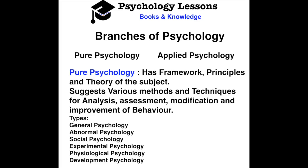Now let's take up the different branches of psychology. There are two basic branches: pure psychology and applied psychology. Pure psychology is directly connected — it has a complete structural framework with principles and theories. It has various methods and techniques to analyze, assess, modify, and improve behavior. Types of pure psychology include general, abnormal, social, experimental, physiological, developmental psychology, and many more.